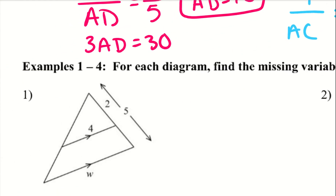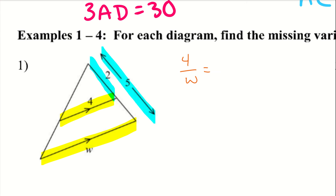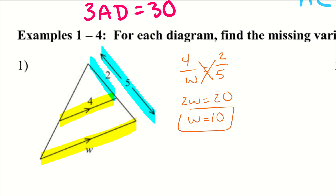Alright, let's go ahead and try a couple of these. Example 1: I'm going to start with the parallel lines, so 4 and W. I'm going to take the smaller triangle over the larger triangle with the sides, and it equals 2 over 5. So I'll have 2W equals 20 — cross-multiplying by 5 — and then W equals 10 once I divide by 2.